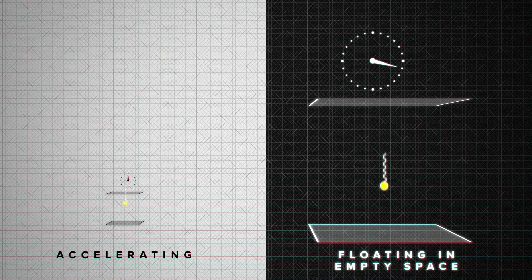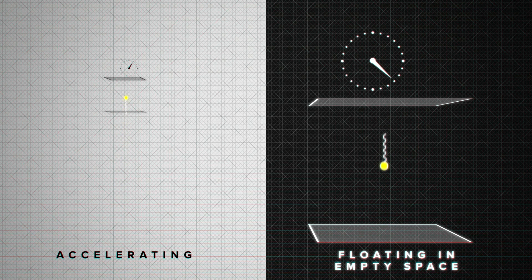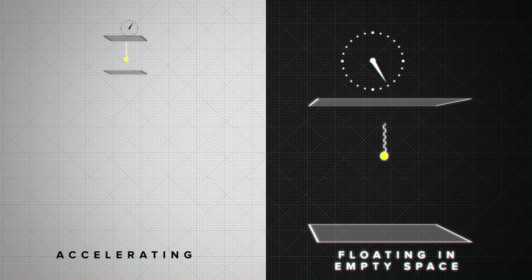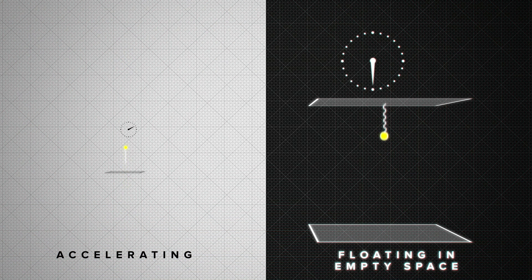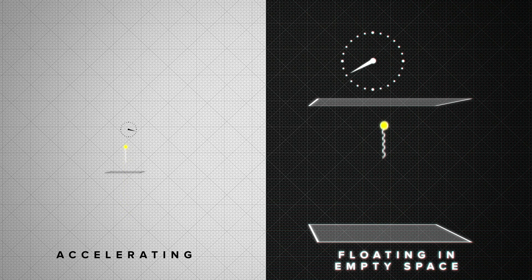By the way, similar arguments will show us that a photon clock in an accelerating reference frame, say on a rocket ship in empty space, will also tick slower compared to a non-accelerating clock. The overall distance that the photon has to travel is larger in an accelerating frame, because that top mirror is running away from the rising photon faster than the bottom mirror catches up to the falling photon.